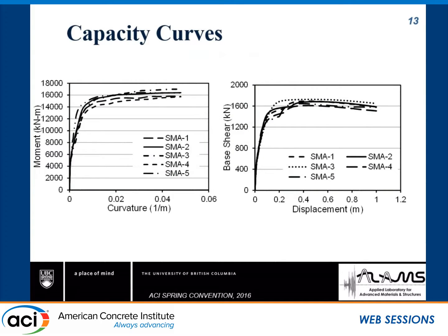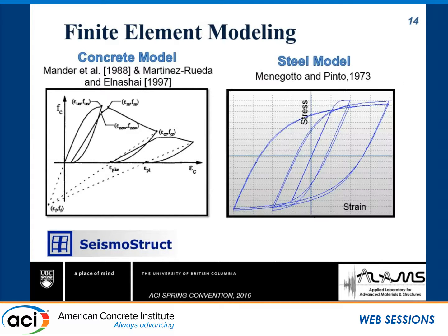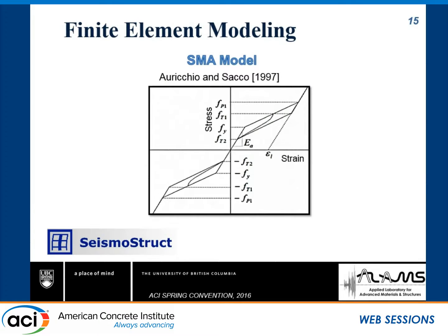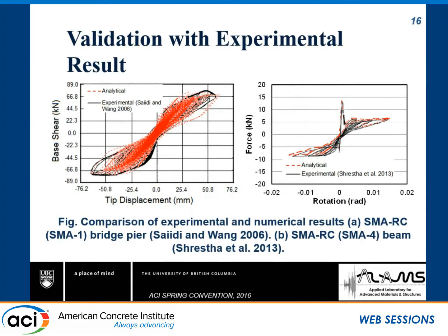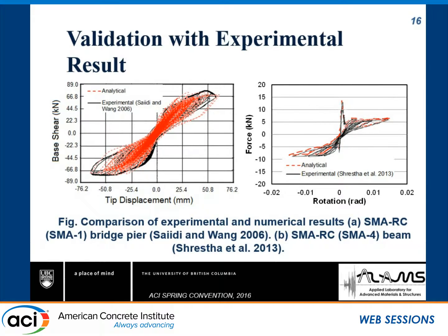The moment-curvature response shows that all five designs have very similar capacity, and the pushover response confirms this. SMA-5, the iron-based one with higher modulus of elasticity, shows slightly higher stiffness compared to the other SMAs. This is a numerical study using standard material models with fiber elements, validated against experimental results — including an SMA-reinforced concrete bridge pier shake table test by Dr. Saidi at the University of Nevada, Reno, and a cyclic beam test by Trestha. The model predicts maximum base shear, drift demand, and residual drift within 5 to 10 percent accuracy.